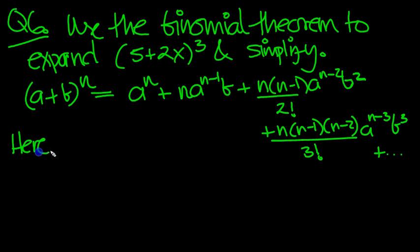So here, our first term a equals 5, our second term b equals 2x, and n is 3.